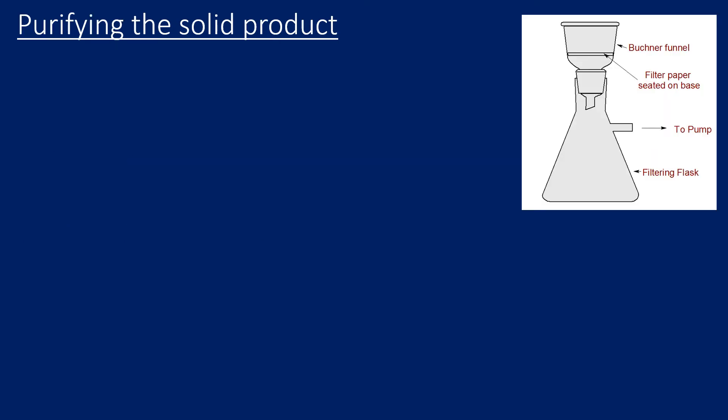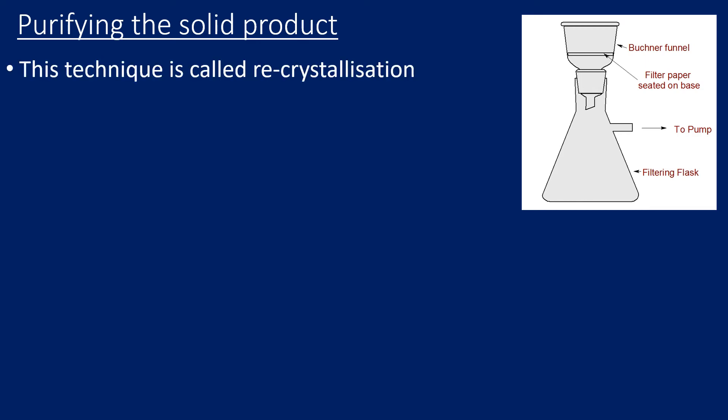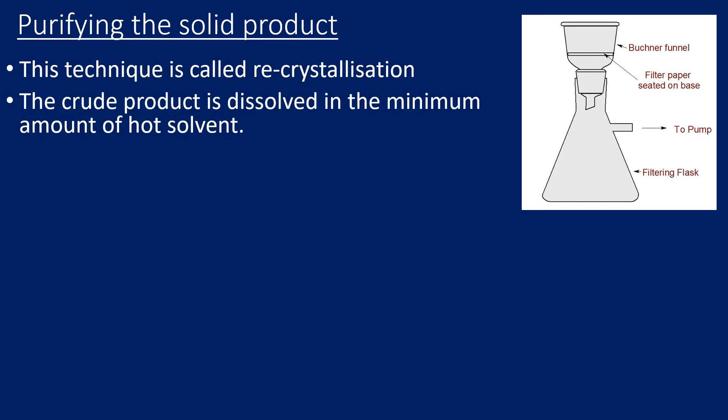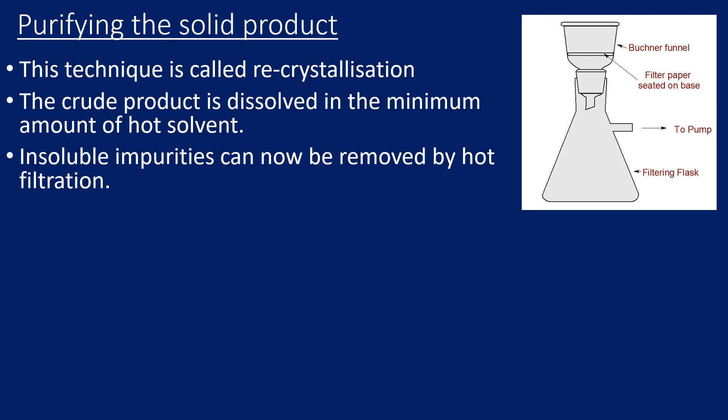The next stage is to take our crude solid and purify it. This process is called recrystallization. The first thing we do is take our crude product and dissolve it in the minimum amount of hot solvent. We can then remove any insoluble impurities via a hot filtration.